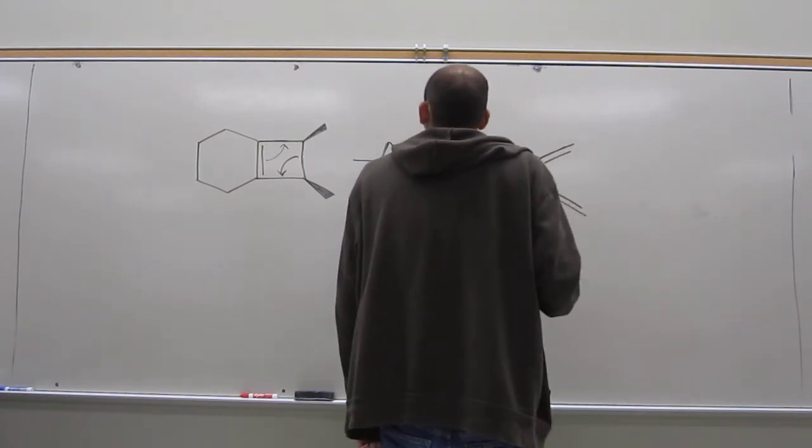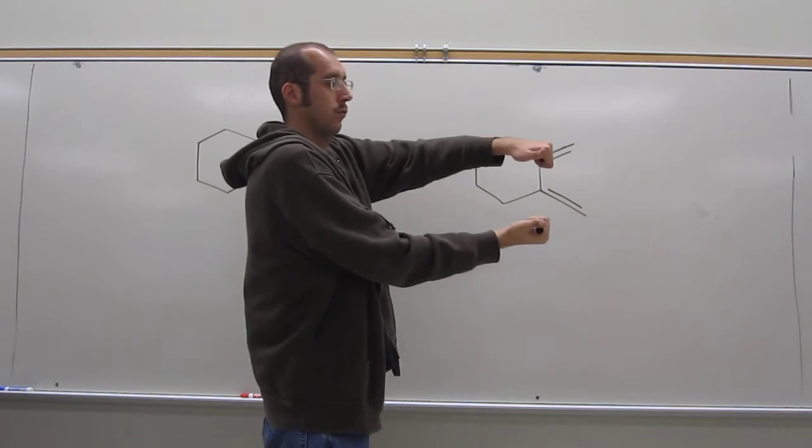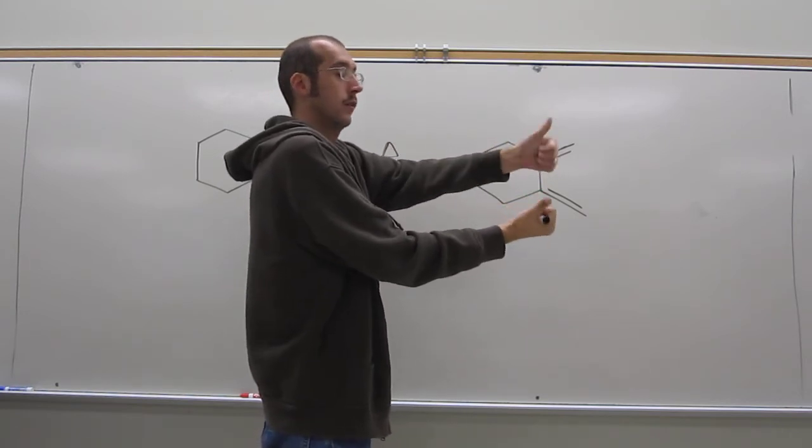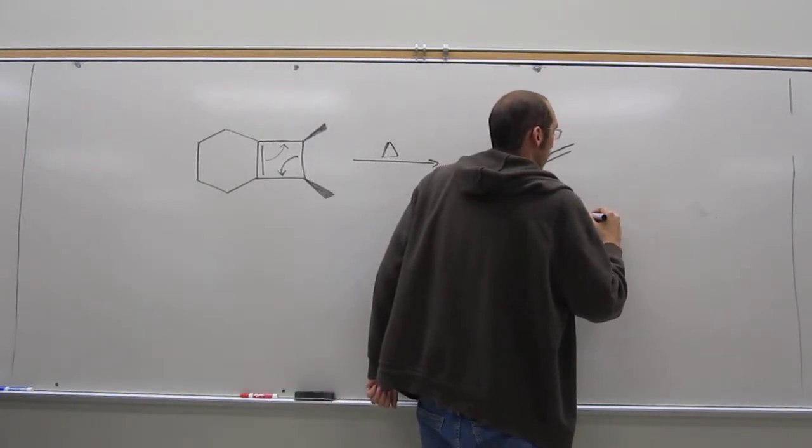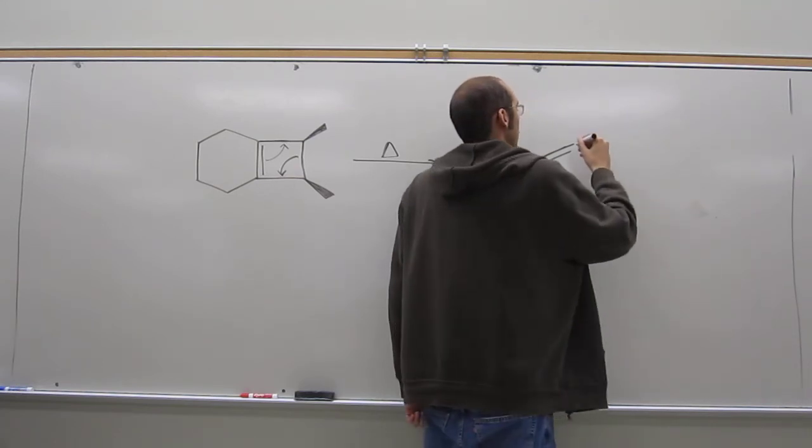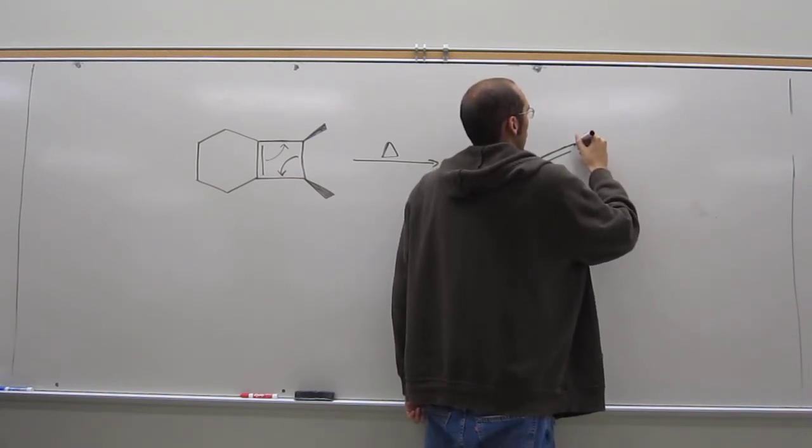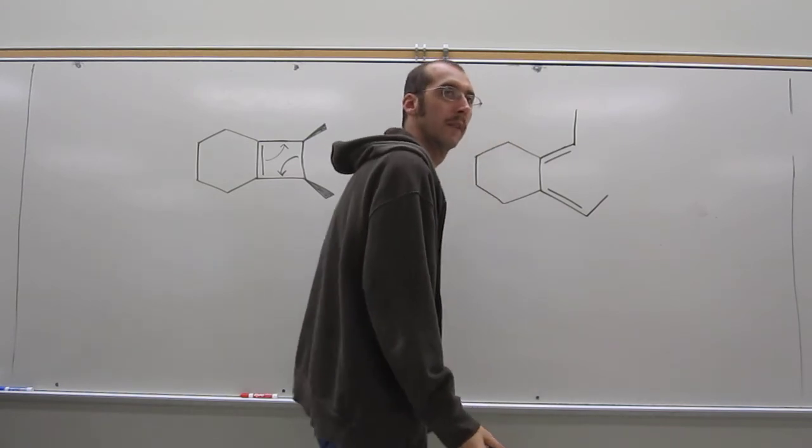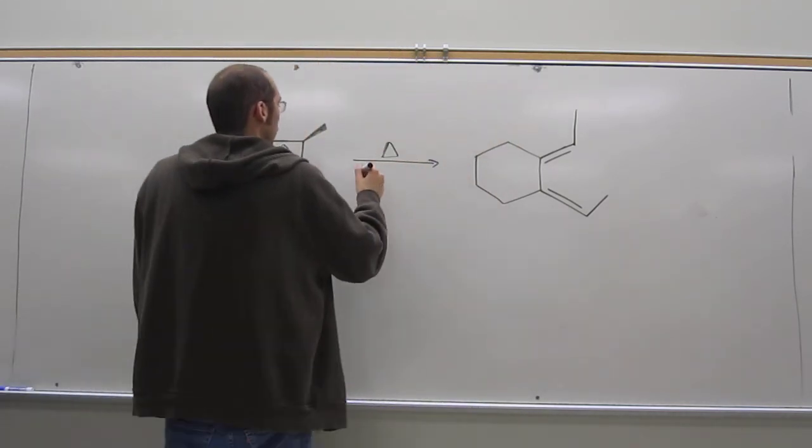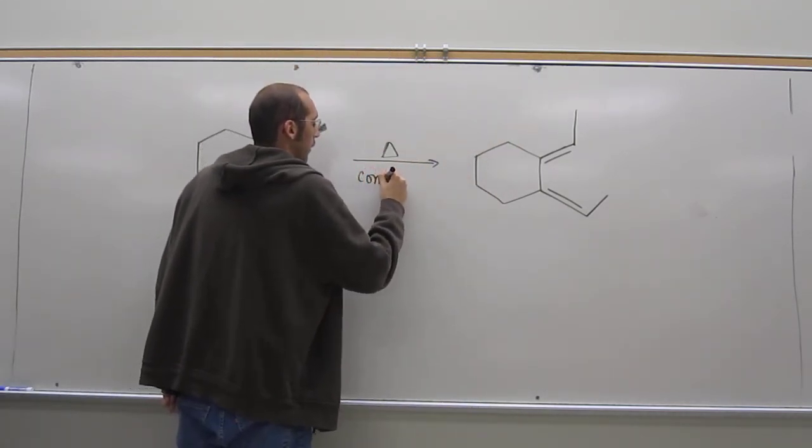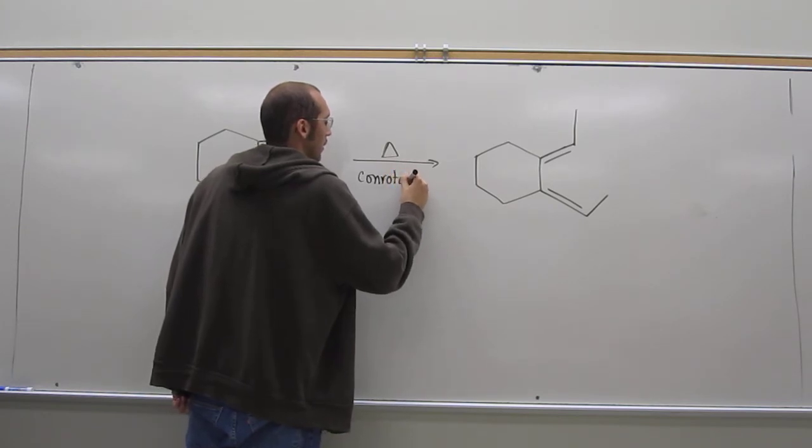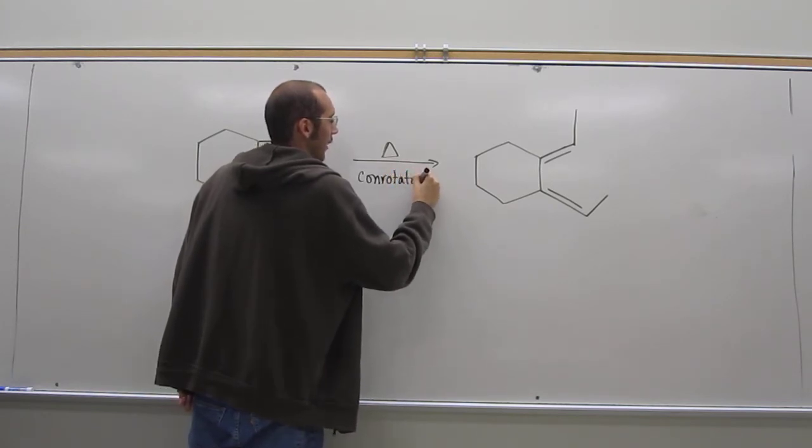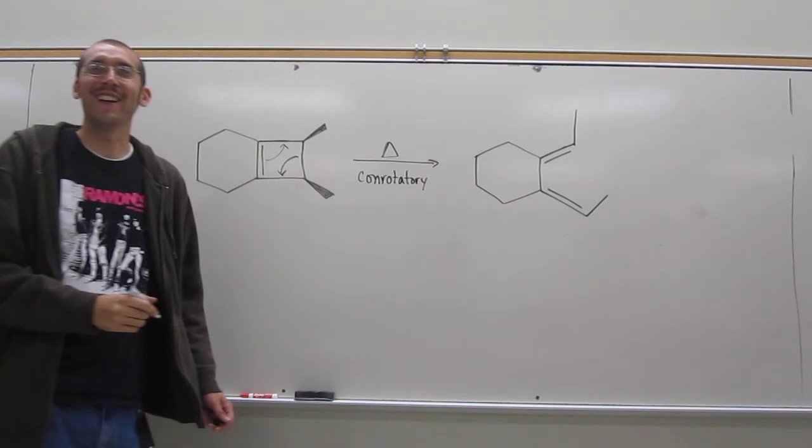That'd be quick liners. And again, con means same way. So that one will keep the same as last time. This one, instead of going down, it'll go like that. So we call this conrotatory.